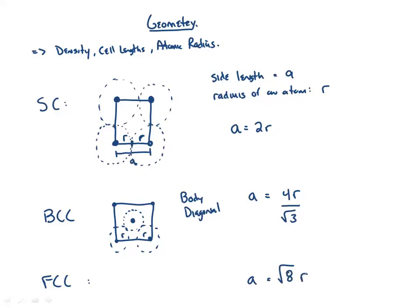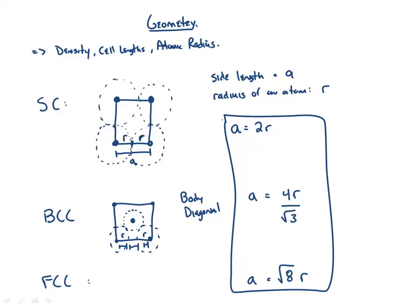For face-centered cubic, the formula ends up being A = √8 · r. Those atoms aren't touching each other across the face — there's an atom on each face to account for. All of this is geometry, and what I want you to be able to do is know that these formulas are available and use them to calculate what's needed.